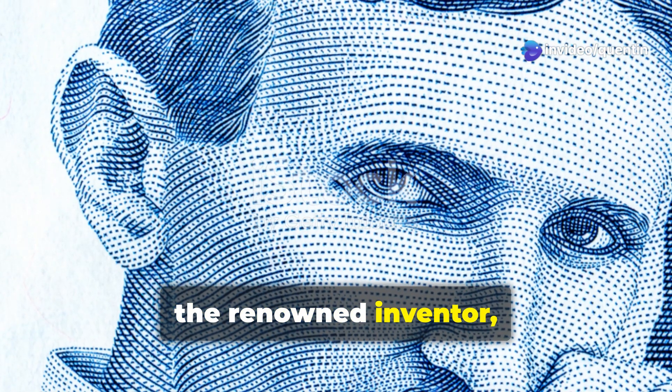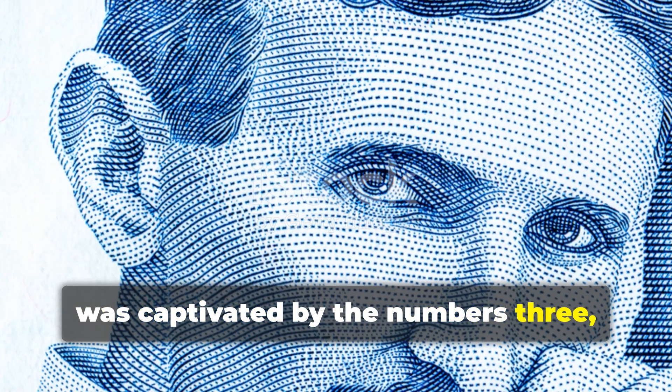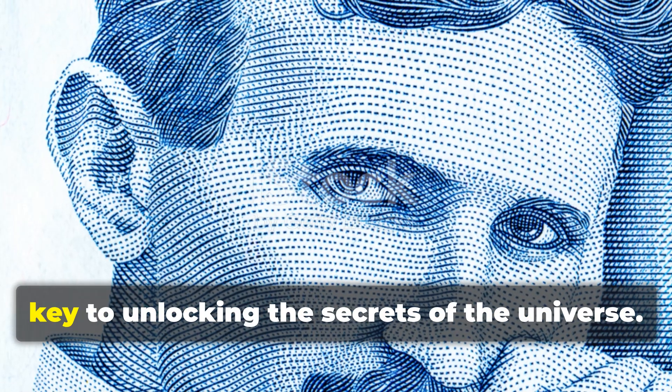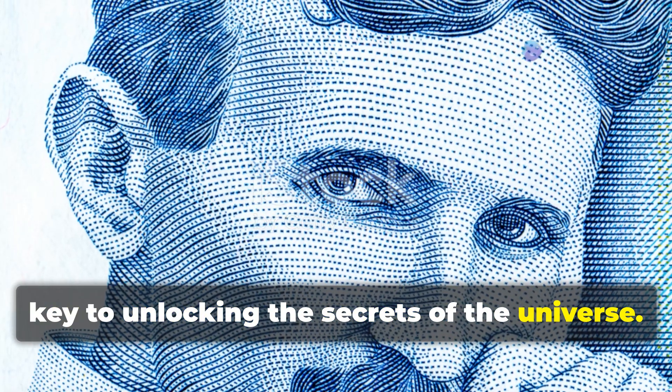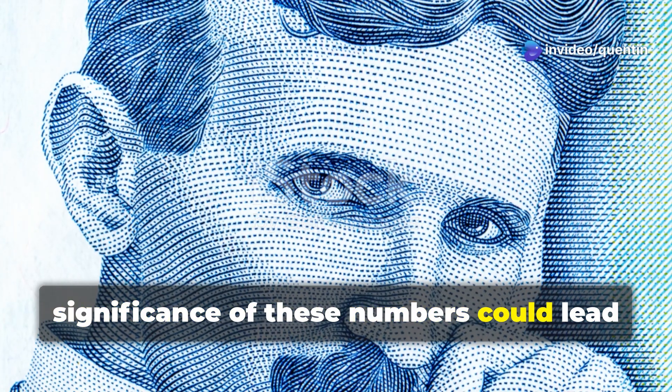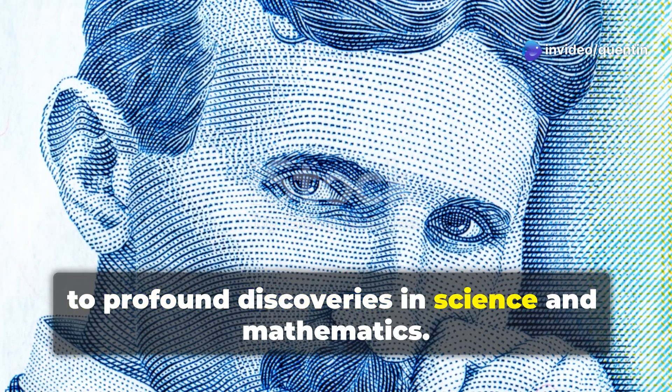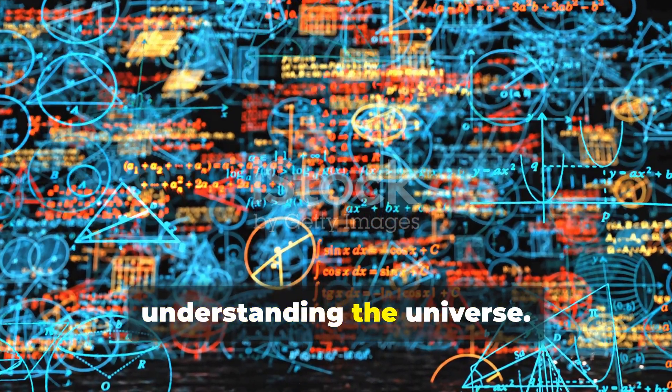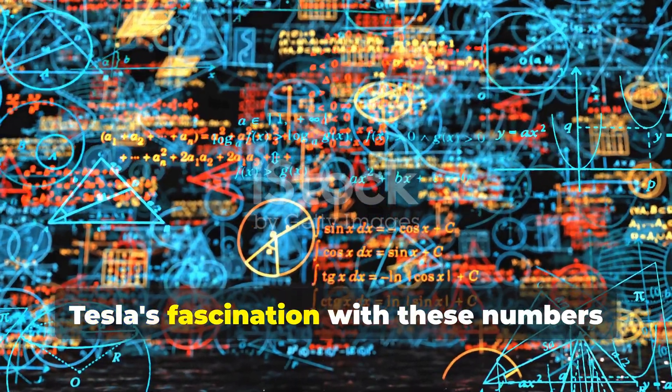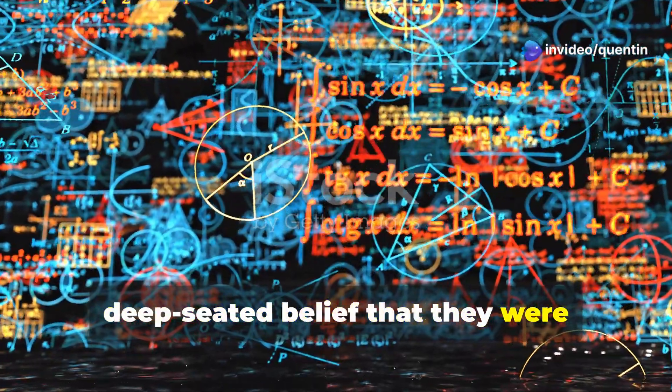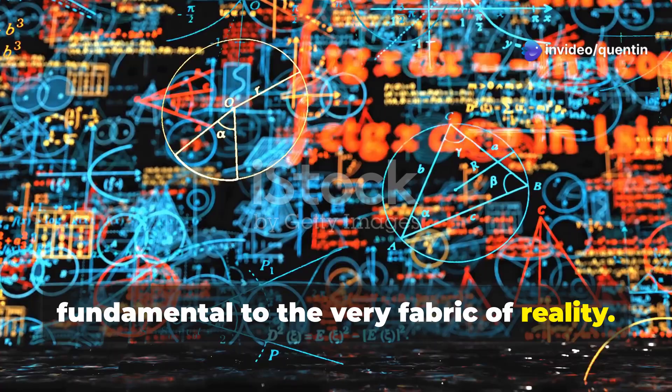Nikola Tesla, the renowned inventor, was captivated by the numbers 3, 6, and 9. He often referred to these numbers as the key to unlocking the secrets of the universe. Tesla believed that understanding the significance of these numbers could lead to profound discoveries in science and mathematics. He saw them as holding a key to understanding the universe. Tesla's fascination was not just a passing interest, it was a deep-seated belief that they were fundamental to the very fabric of reality.